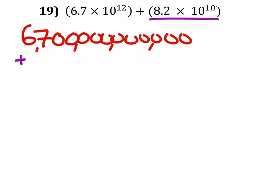We're going to add this to the second number, which would be 8, 2 with 9 zeros.